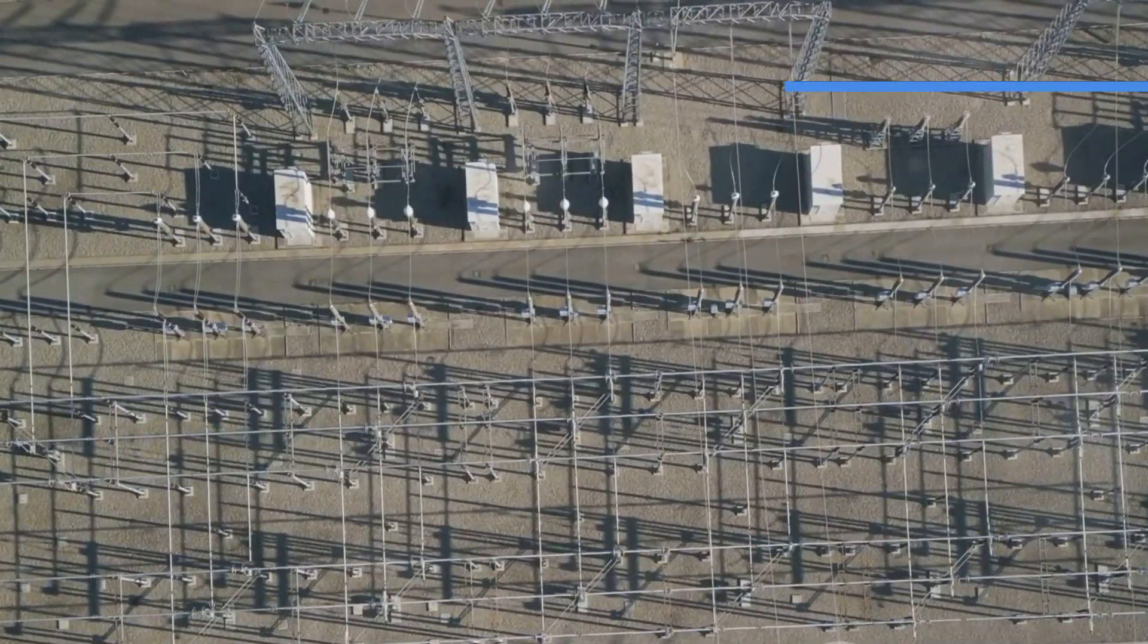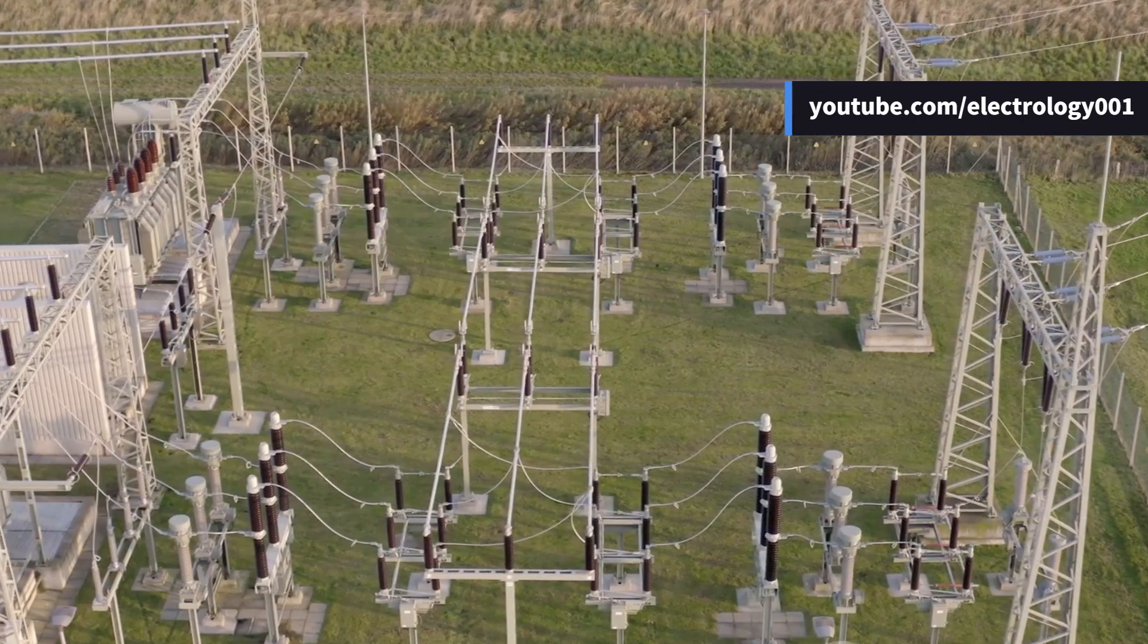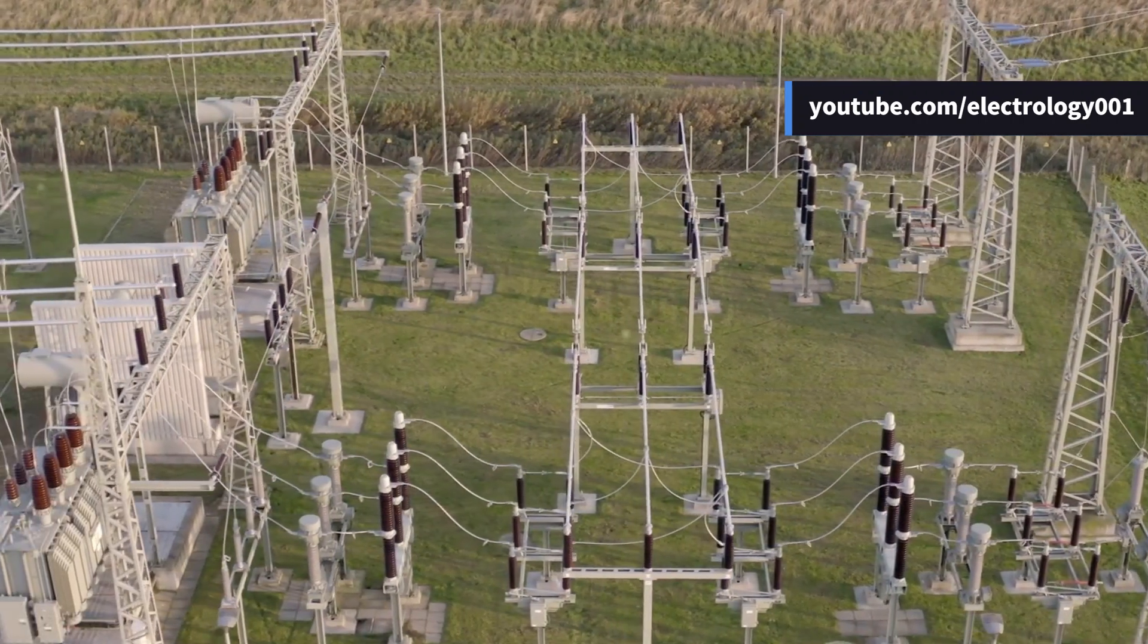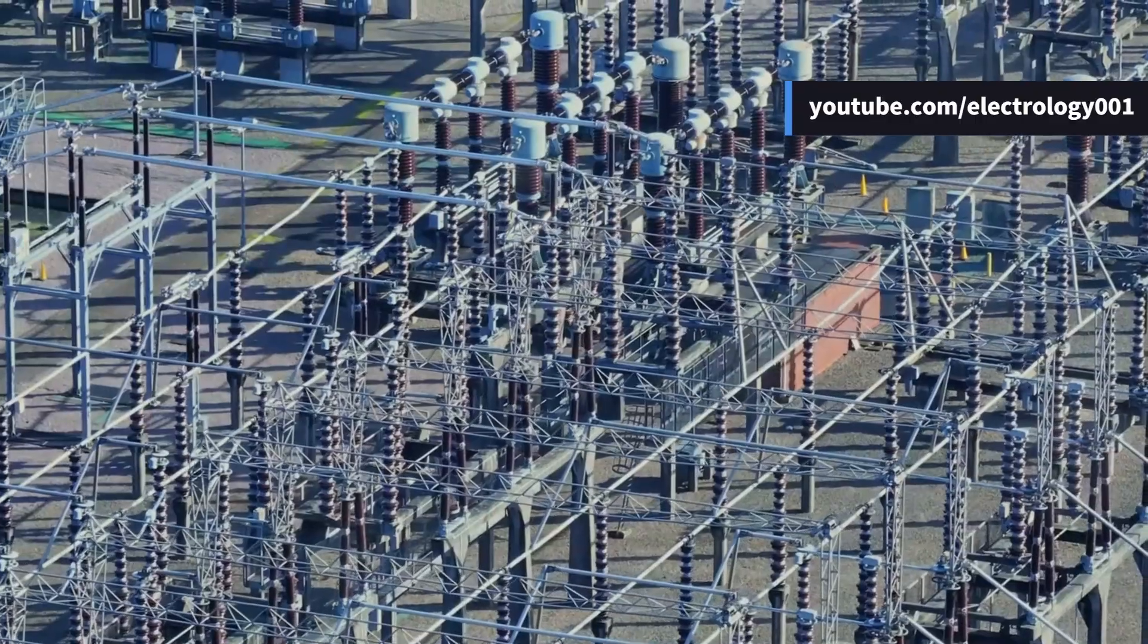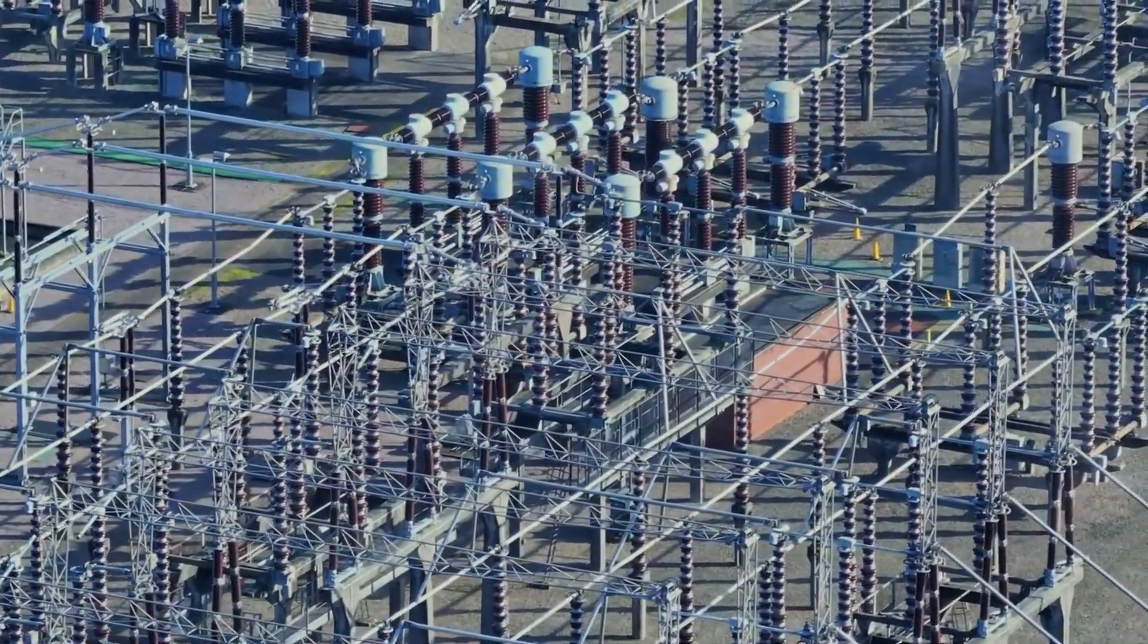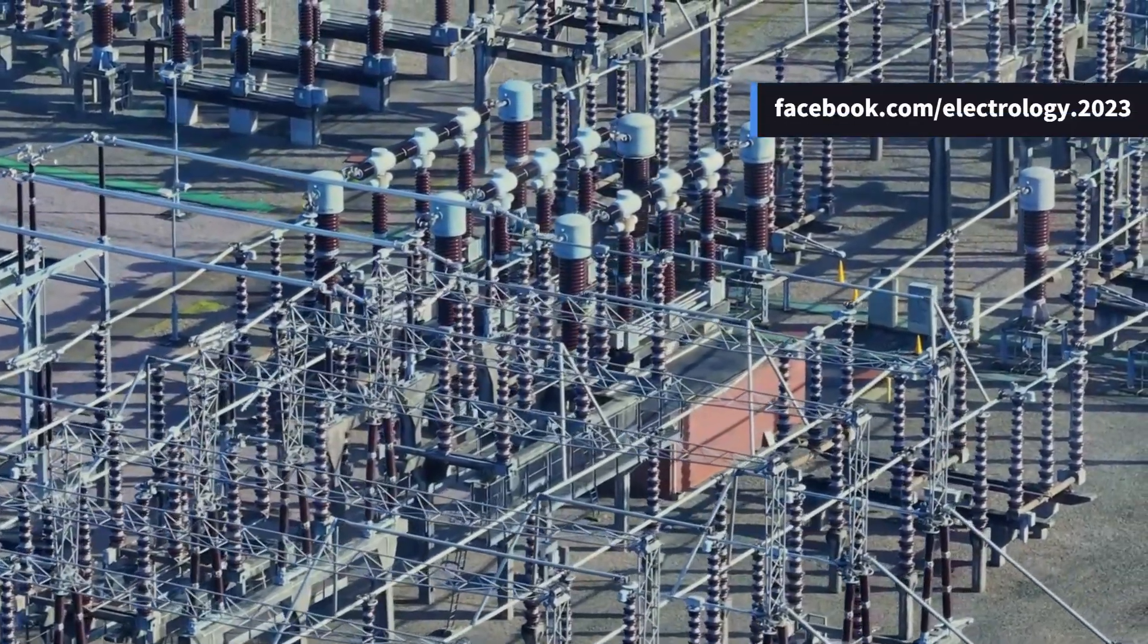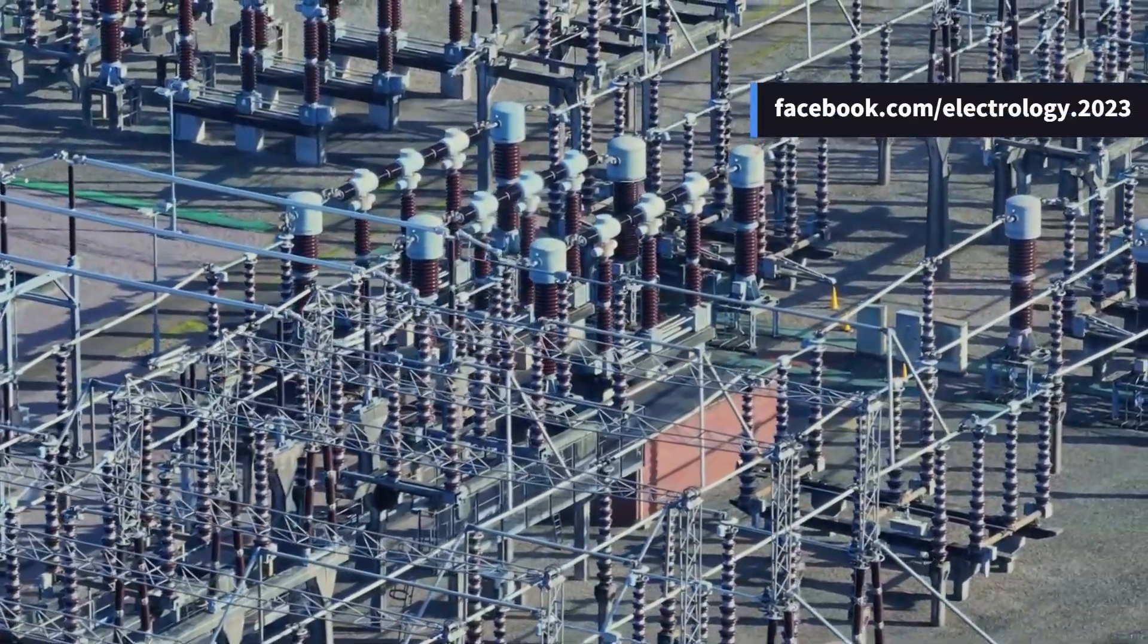So what exactly is a bus bar arrangement? In a switchyard, the bus bar arrangement is essentially a combination of bus bar and circuit breaker. Buses are usually made of hollow tubular aluminum or copper, commonly called IPS tubes, where IPS stands for iron pipe size, a code used for the selection of these tubes.